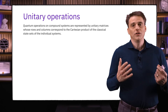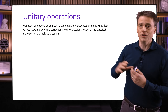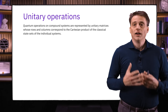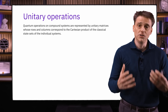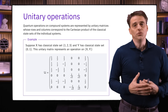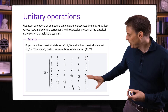Finally, we move on to unitary operations on multiple systems. Using the same basic idea that multiple systems can be viewed as single compound systems, quantum operations on compound systems are represented by unitary matrices — just like for single systems — where the rows and columns correspond to the Cartesian product of the classical state sets of the collection of systems. For example, if X has classical states {1, 2, 3} and Y is a qubit, then a certain unitary matrix provides an example of a quantum operation on the pair X, Y.